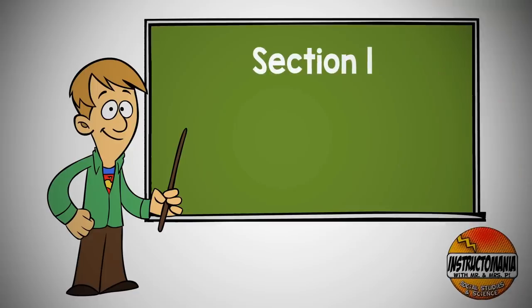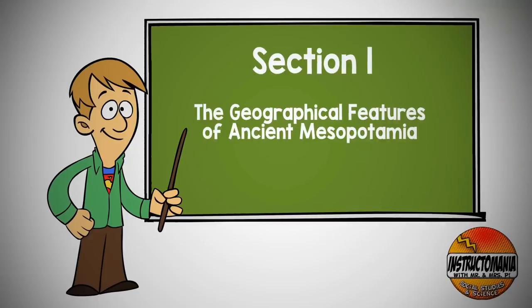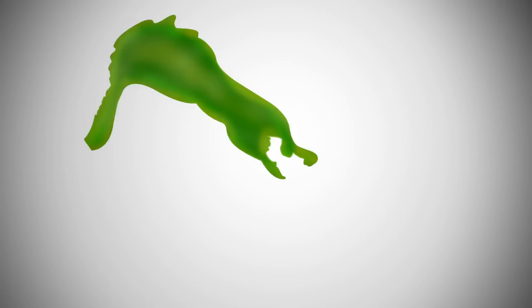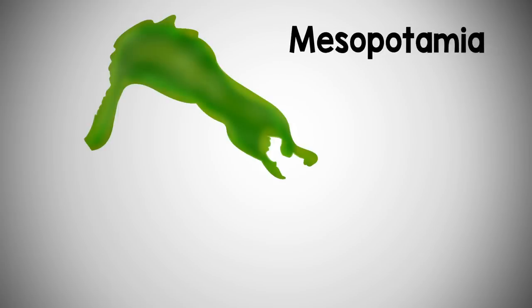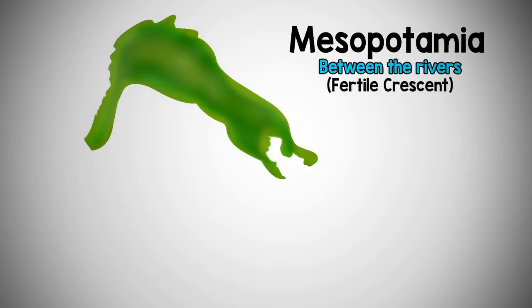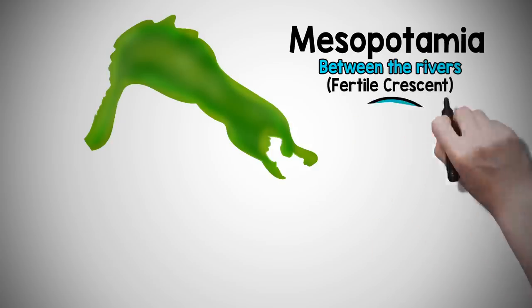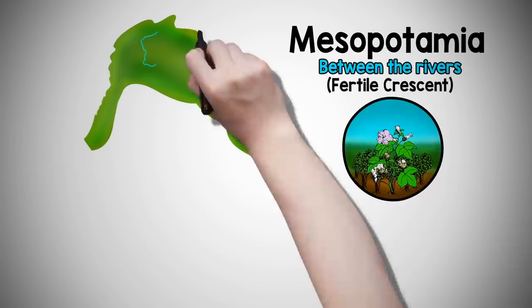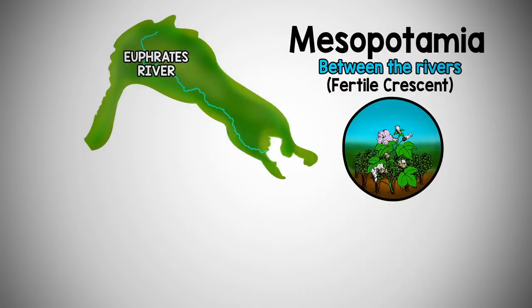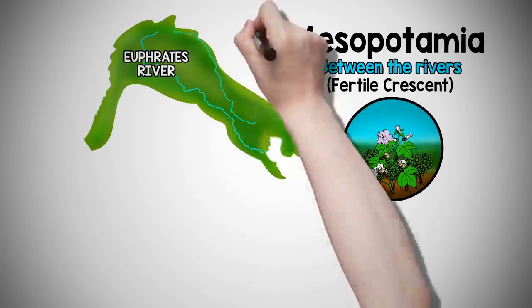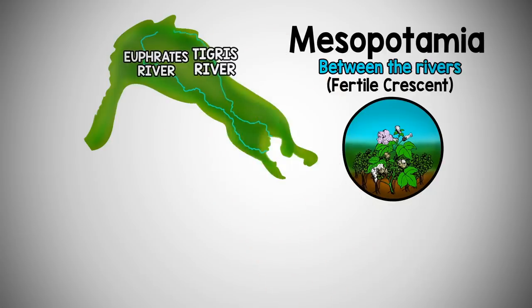Section 1: The Geographical Features of Ancient Mesopotamia. The Greeks named the area Mesopotamia, meaning between the rivers. It was also known as the Fertile Crescent, due to the silt-rich soil provided by flooding of the Euphrates River and the Tigris River, which spanned modern-day Iraq and Kuwait in a thin moon shape.